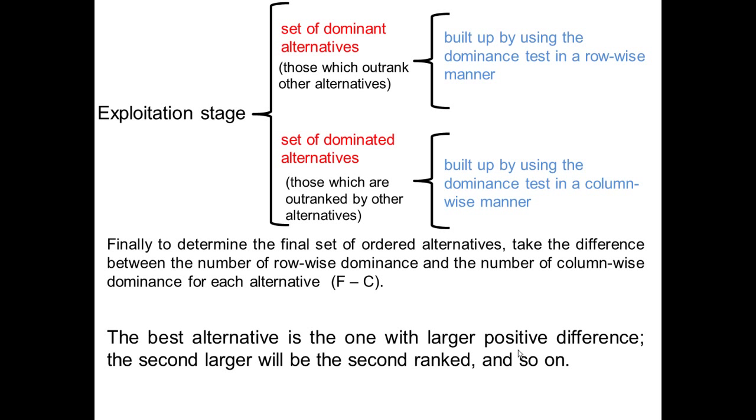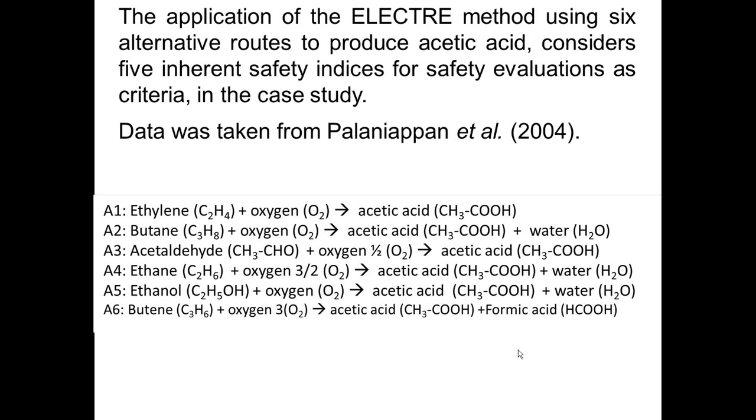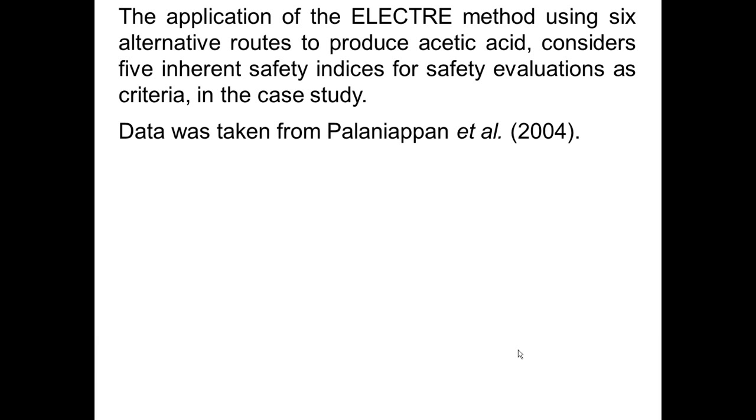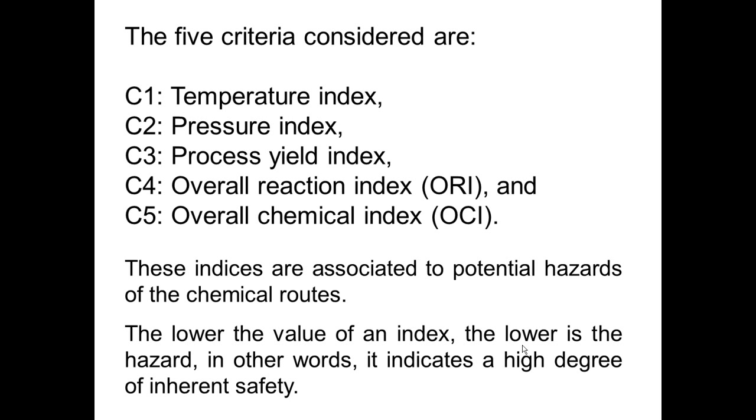The application of the ELECTRE method using six alternative routes to produce acetic acid, that considers five inherent safety indices for safety evaluation as criteria, is given in this case study. The five criteria considered in this case are temperature, pressure, yield, overall reaction index, and overall chemical index. These indices are associated with potential hazards of the chemical routes. The lower the value of an index, the lower is the hazard. In other words, it indicates a high degree of inherent safety.